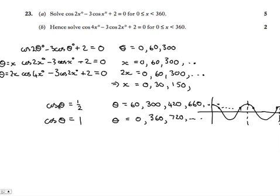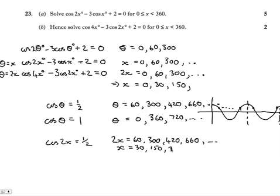So translating all this to the 2x case: cos of 2x being a half would give us 2x being 60, 300, 420, 660, and so on. Halving these to get the value of x would give us 30, 150, 210, 330. The next cycle, if we halved the next two values, would get something more than 360. We're only wanting values up to 360, so there are four values appearing.